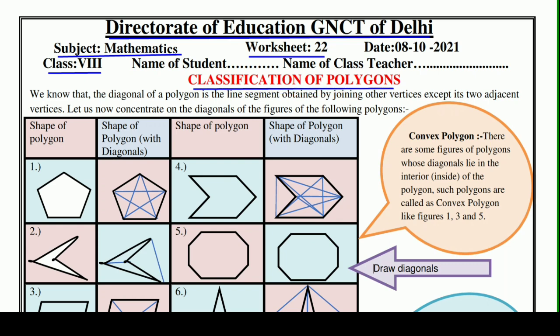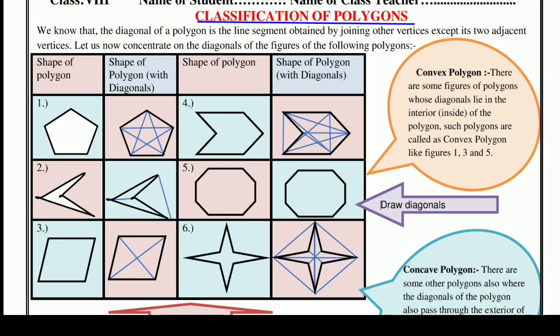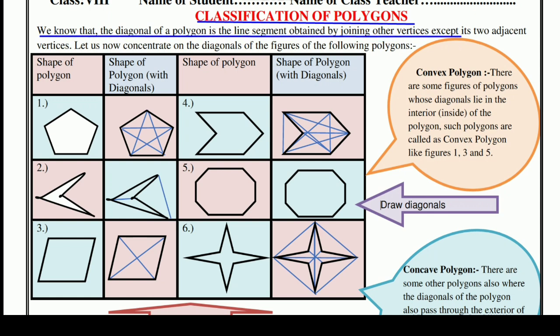So students, in the past worksheet, we also learned the classification of polygons, and we talked about polygons and diagonals. Without wasting our time, let's start. We know that the diagonal of a polygon is the line segment obtained by joining other vertices except its two adjacent vertices.